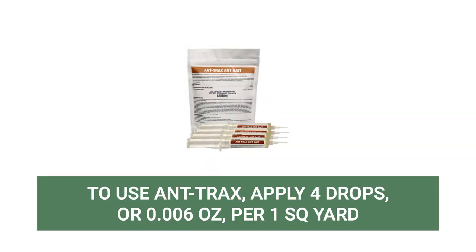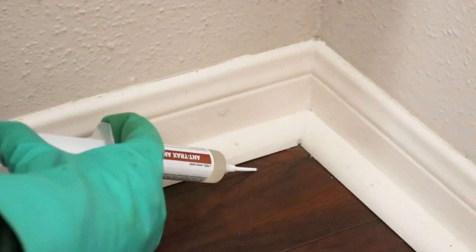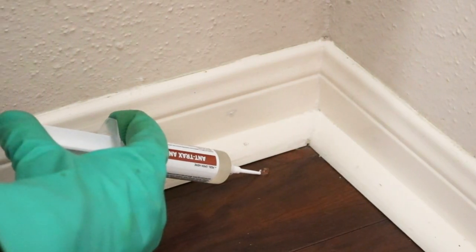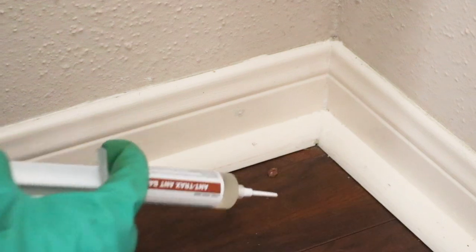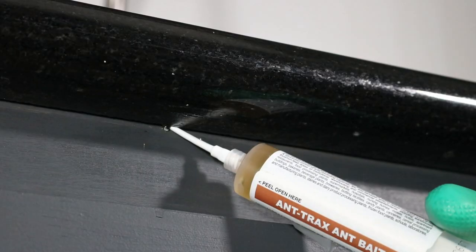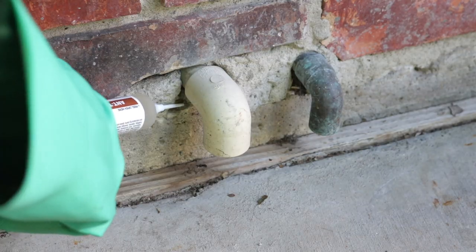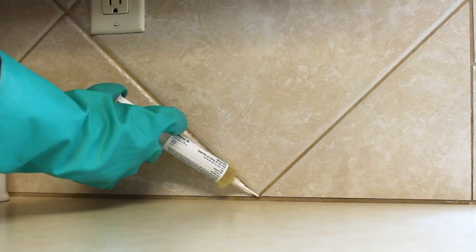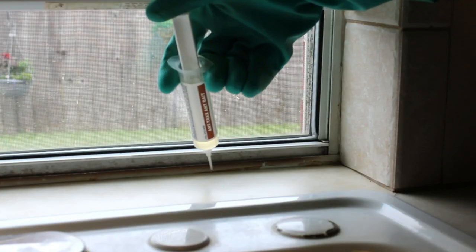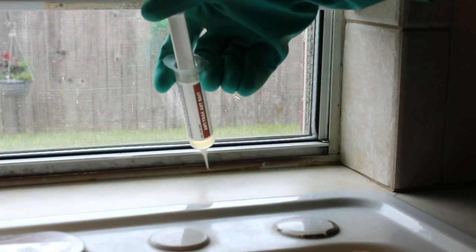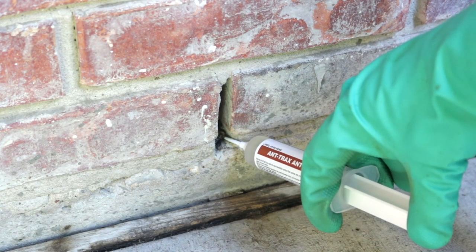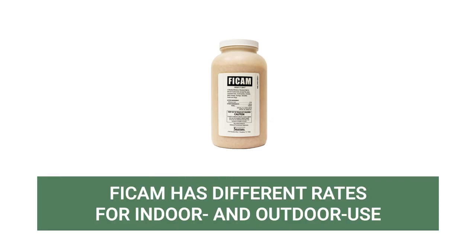If you're using Ant Tracks indoors, apply 4 drops or 0.006 ounces per square yard of treatment area. Focus on areas where you've seen foraging activity and common entry points, like along baseboards, under sinks and countertops, around water pipes, along the kitchen backsplash, near window or door crevices, or in voids where ants may be harboring.